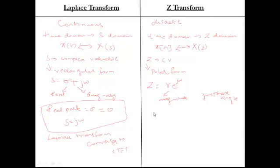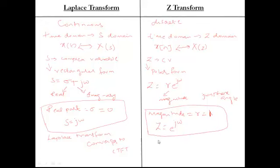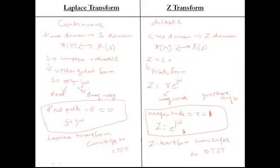So instead of doing continuous time Fourier transform or discrete time Fourier transform, you can do Laplace transform of a signal and apply sigma equal to zero — wherever S is there, apply j-omega — and Laplace transform becomes continuous time Fourier transform. Similarly, wherever Z is there, apply e^(jω), and Z-transform becomes discrete time Fourier transform. You can find continuous time and discrete time Fourier transforms with the knowledge of Laplace transform and Z-transform respectively.